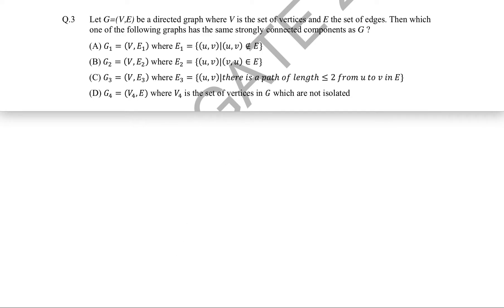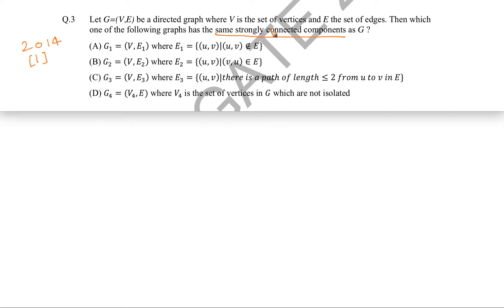This question came in GATE 2014 for one mark. Let G equal to (V, E) be a directed graph where V is the set of vertices and E is the set of edges. The question asks: which one of the following graphs G1, G2, G3, G4 has exactly the same strongly connected components as G?